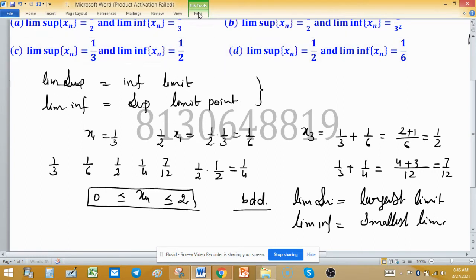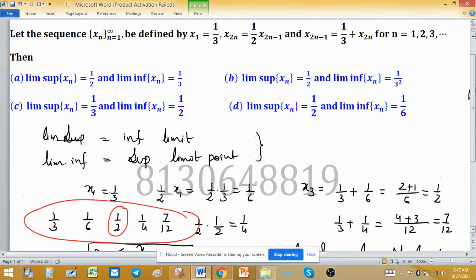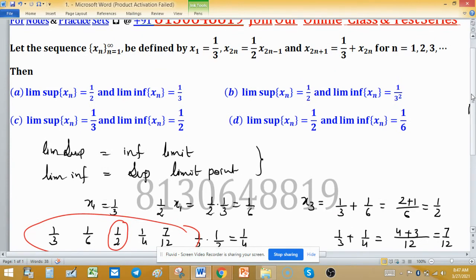For these few terms, we can say that largest point is half, so limit superior may be half. Remember the used term may, not confirm, so look for options. Limit superior is half in option A, similarly in option B, in option C 1 upon 3, and in option D 1 upon 2.